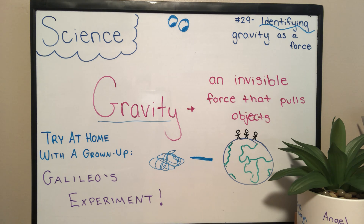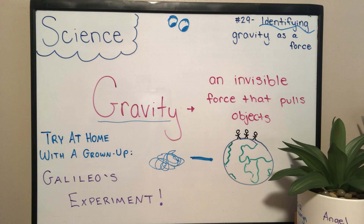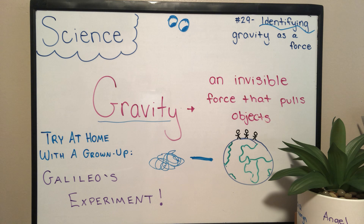He was a physicist — somebody who studied physics. He tried a bunch of experiments and he discovered that all objects are pulled down to Earth at the exact same speed. It doesn't matter if one object has more mass or is heavier than another. I'm going to do a quick Galileo experiment with you, and you can try your own at home with non-breakable things.